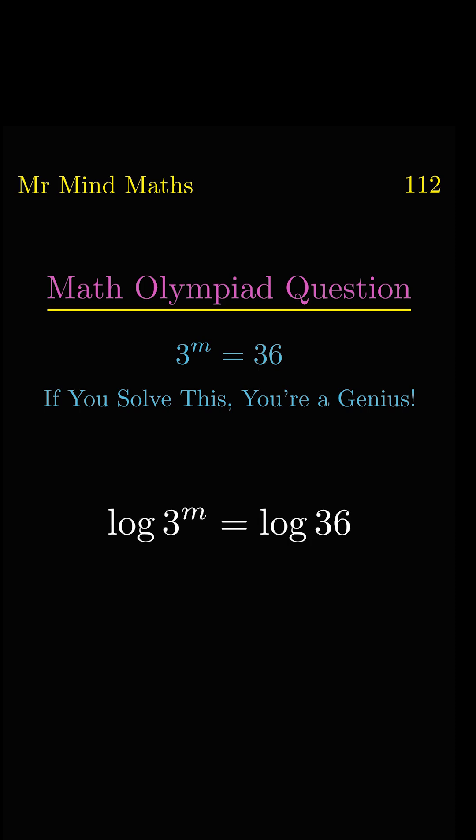So here we will use log property. So m will become coefficient of log 3. Now log 3 will divide to the right side.